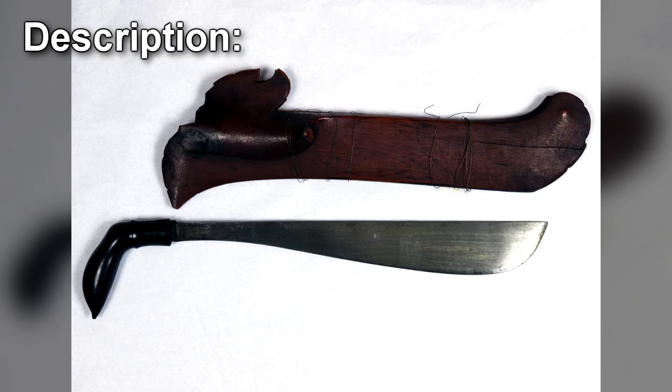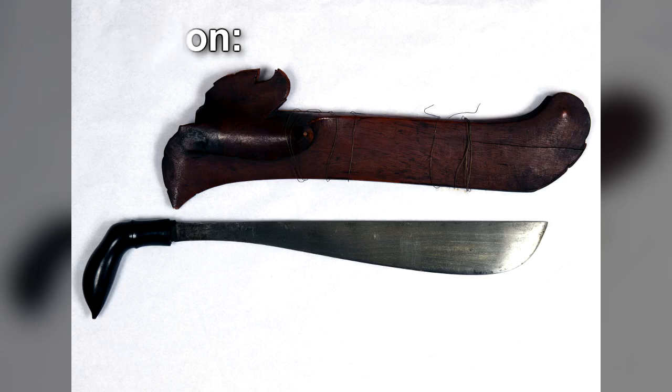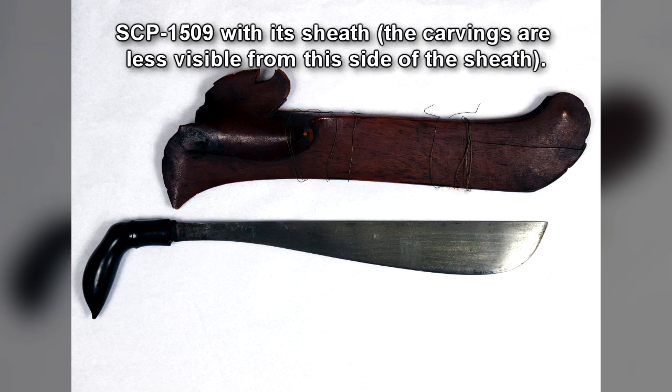SCP-1509 is a bladed weapon similar to an Indonesian parang. It is approximately 63 cm in length, with a steel blade 48 cm in length and 11 mm thick at its widest point.